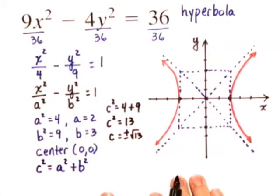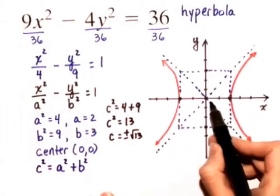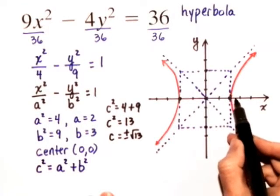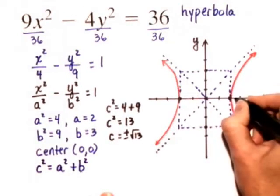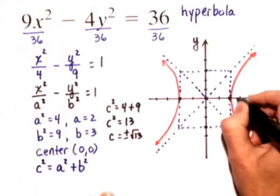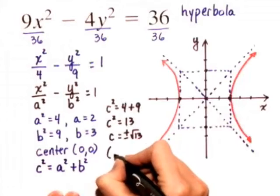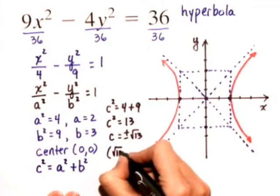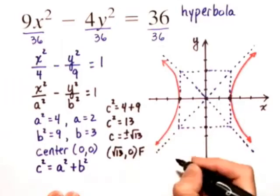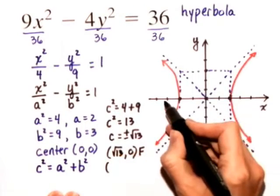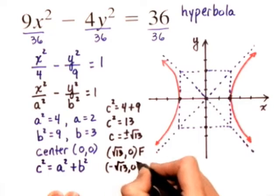So, each focus is also located on this transverse axis. From the center, we go the square root of 13 units to the right. The coordinates of the first focus would be the square root of 13, 0. That's one focus. And the other one would be negative square root of 13, 0.